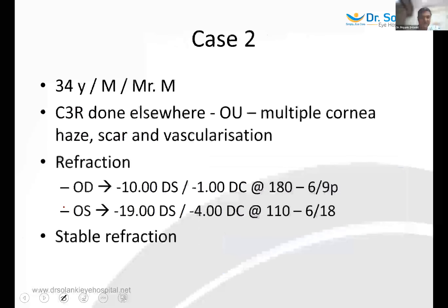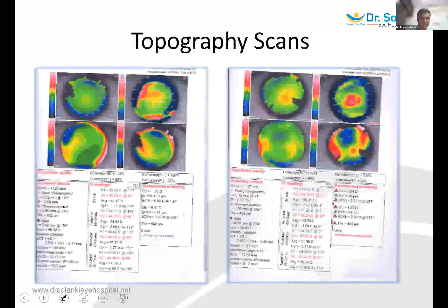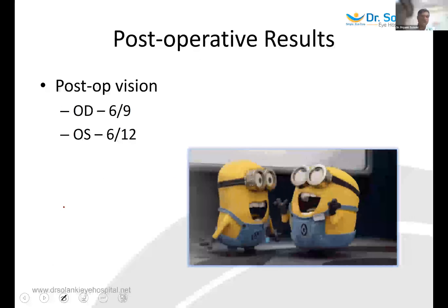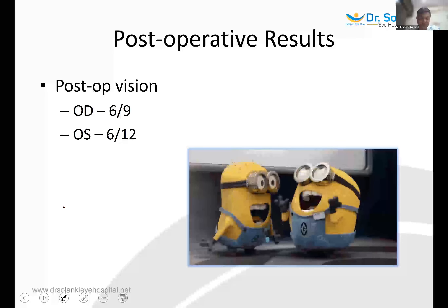Case two: a 34-year-old male with keratoconus, post-collagen cross-linking done elsewhere, with multiple corneal haze, scarring, and vascularization from prior contact lens use. High compound myopic astigmatism in both eyes with low vision in the left eye, but stable refraction for 2 years. Postoperatively, right eye was 6/9 — same as preoperative — and left eye improved from 6/18 to 6/12. He has been following up annually and is very happy.